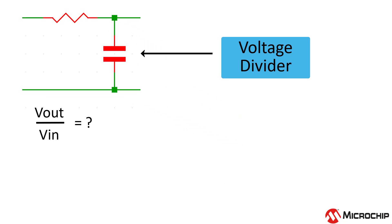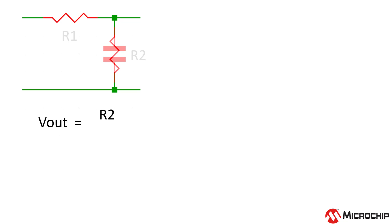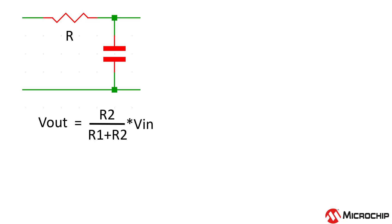This resistor and capacitor act as a voltage divider. If this capacitor was a resistor, we'd have R2 divided by R1 plus R2 times Vin. Instead of the impedance of resistor 2, we have the impedance of the capacitor, which is 1 divided by S times C. So our transfer function looks like this.